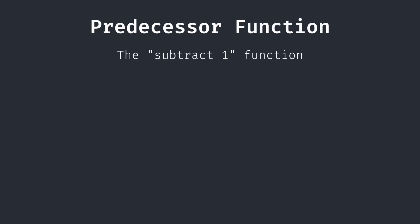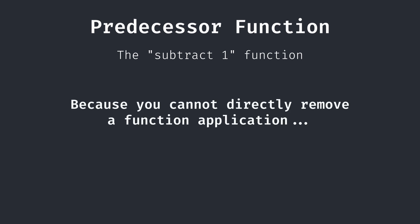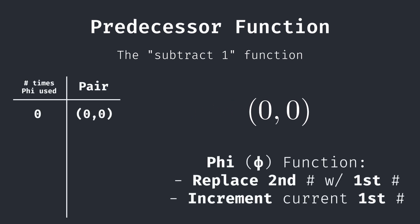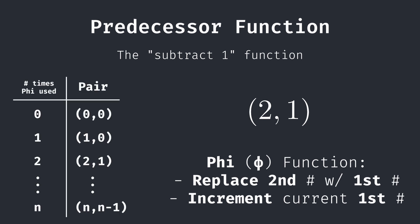Finally, let's talk about the predecessor function, which subtracts 1 from any church numeral n. Because you cannot directly remove an application of a function, we must use the numeral n to apply a function n minus 1 times. Let's begin by observing a neat mathematical pattern. Start with a pair of numbers 0, 0. Now we will execute a function arbitrarily named phi on this pair that replaces the second number with the first and increments the current first number. When I call phi once, I get 1, 0, then 2, 1, and so on. Notice how for all pairs after 0, 0, the first number in the pair is how many times I've called phi, and the second number in the pair is exactly 1 less than that. Thus, when I call phi n times, I will get a pair n, n minus 1.